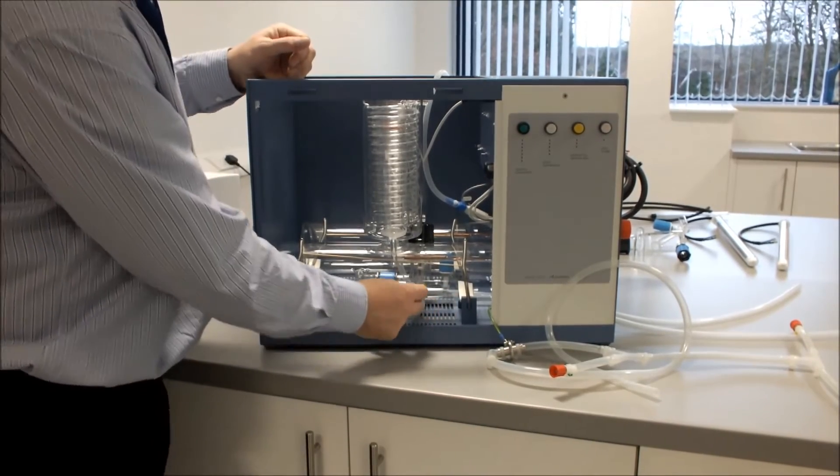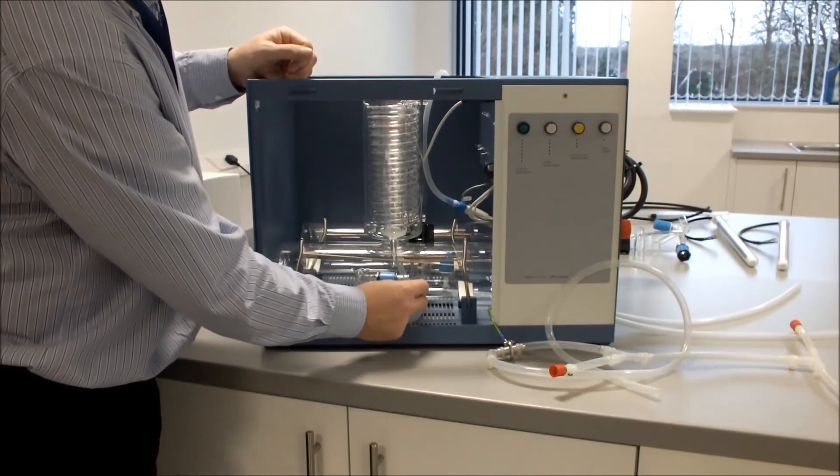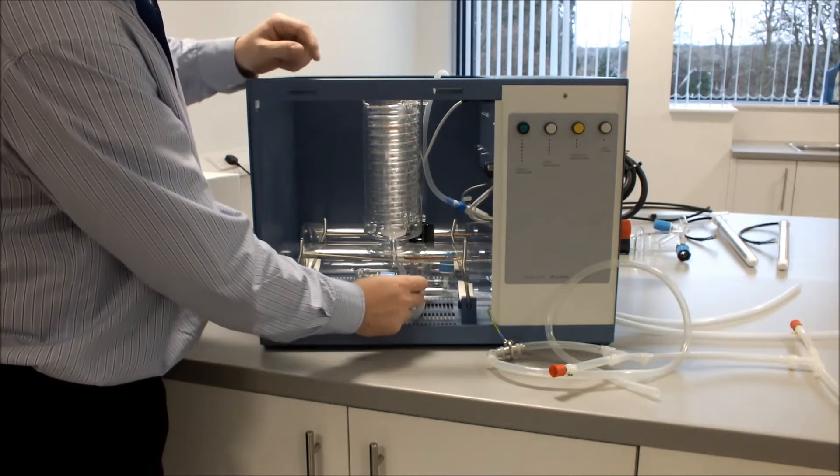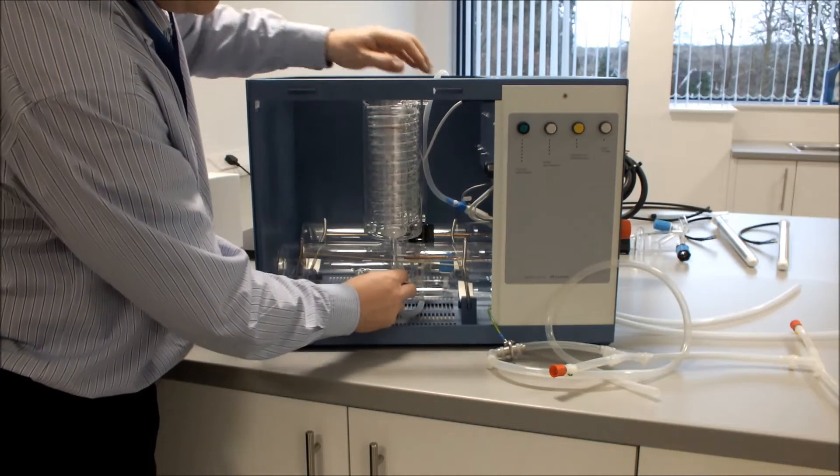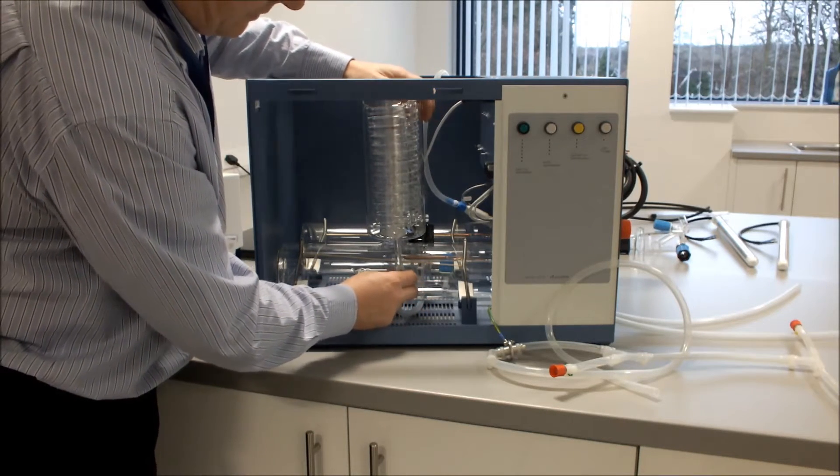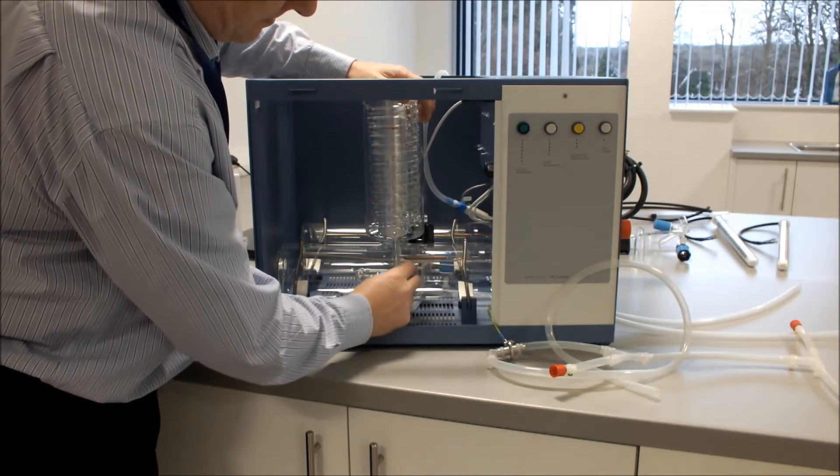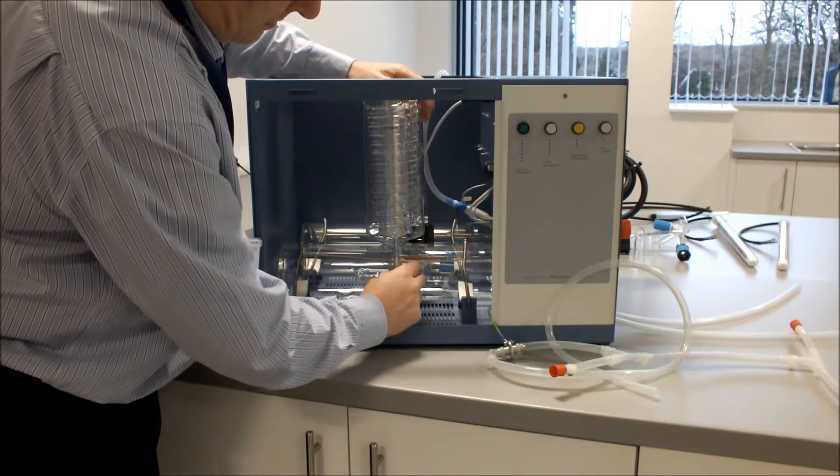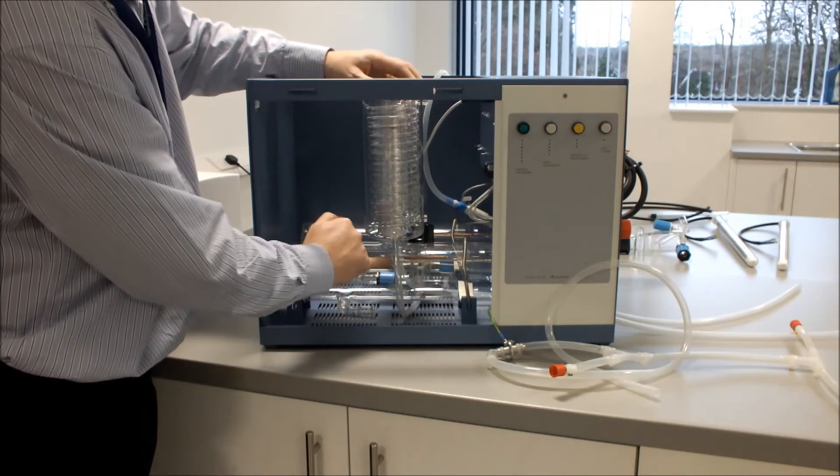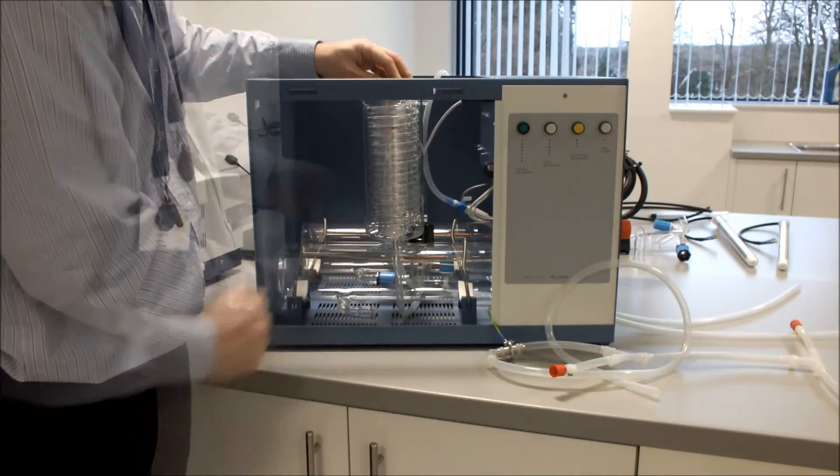We then connect our 300mm 8mm hose from our rear boiler control to the outlet of our condenser. Again this will be tie wrapped.